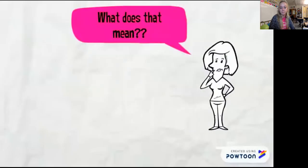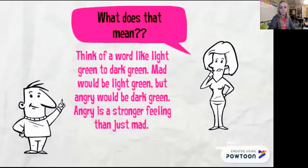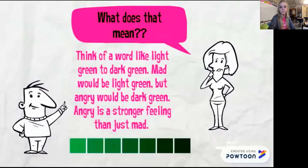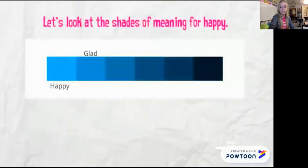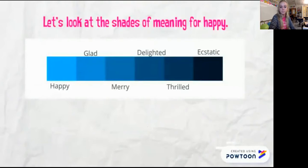So what exactly does that mean? Let's think of a word like light green to dark green. Mad would be the light green, but angry would be darker green because angry is a stronger feeling than just being mad. Let's look at the shades of meaning for the word happy. We start with light blue for happy and then go to glad, merry, delighted, thrilled, and ecstatic. Notice how the colors get darker — the meaning of happy gets stronger.